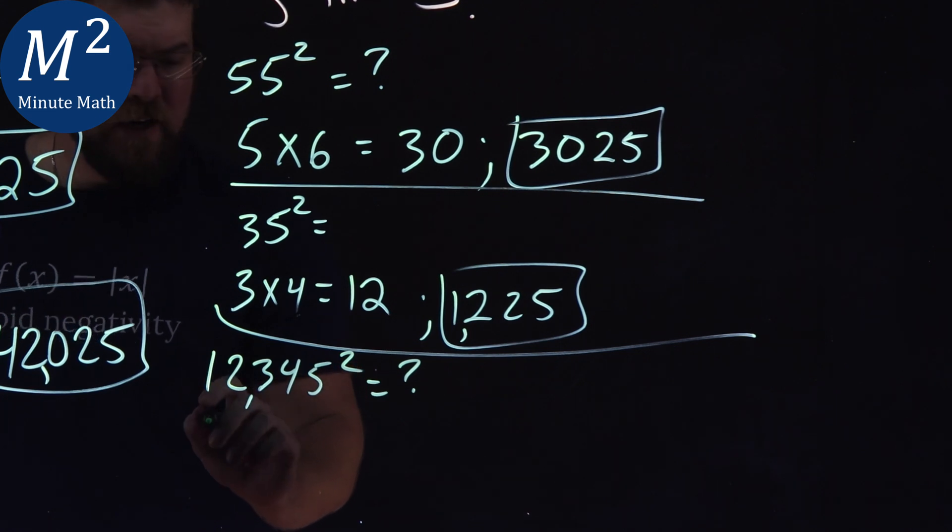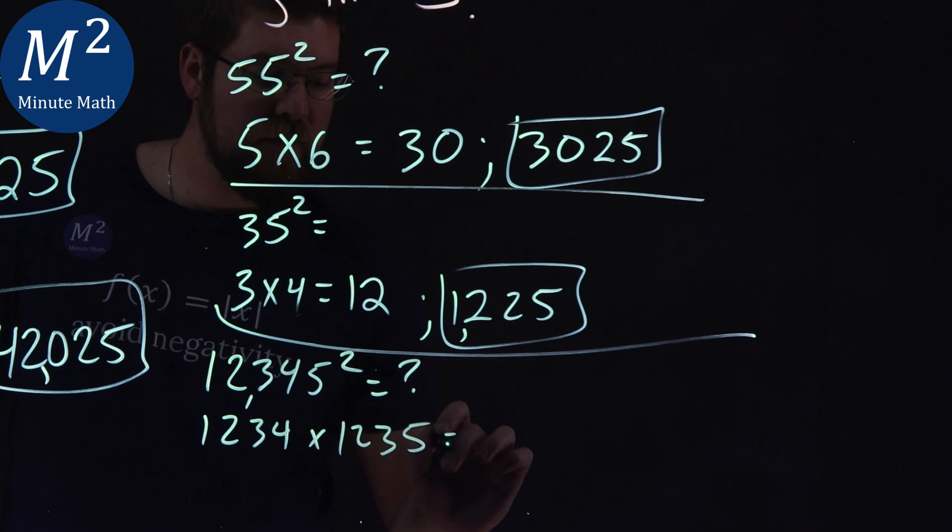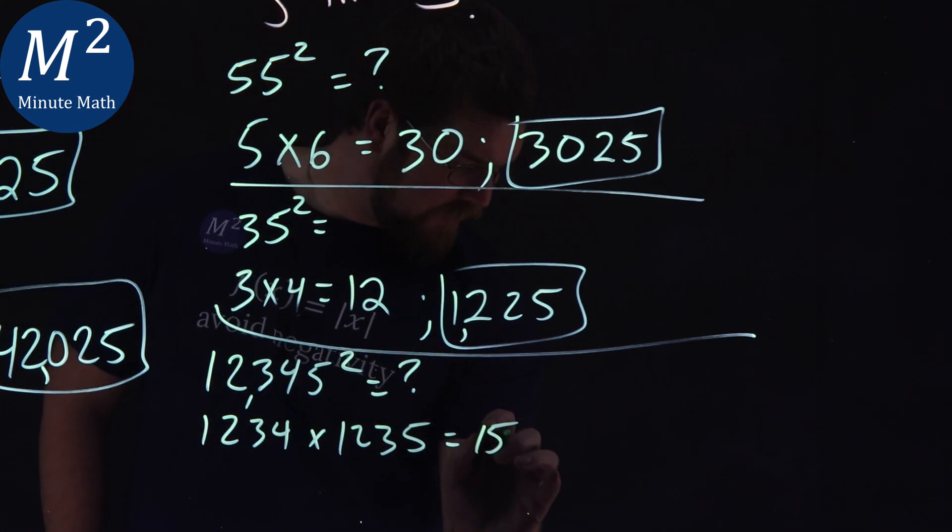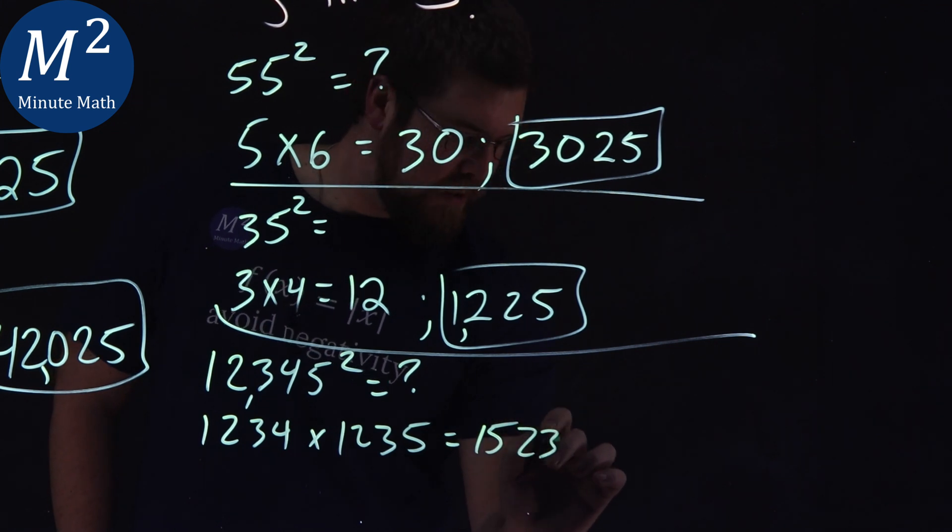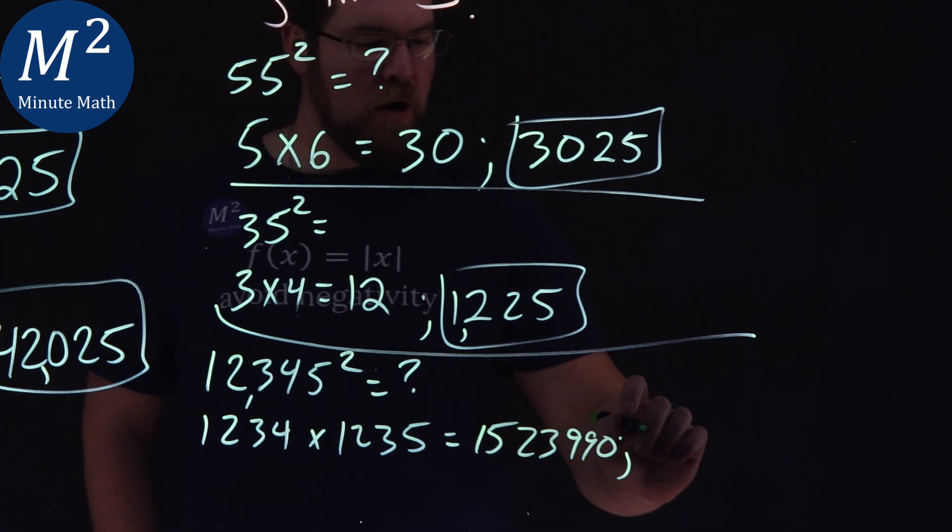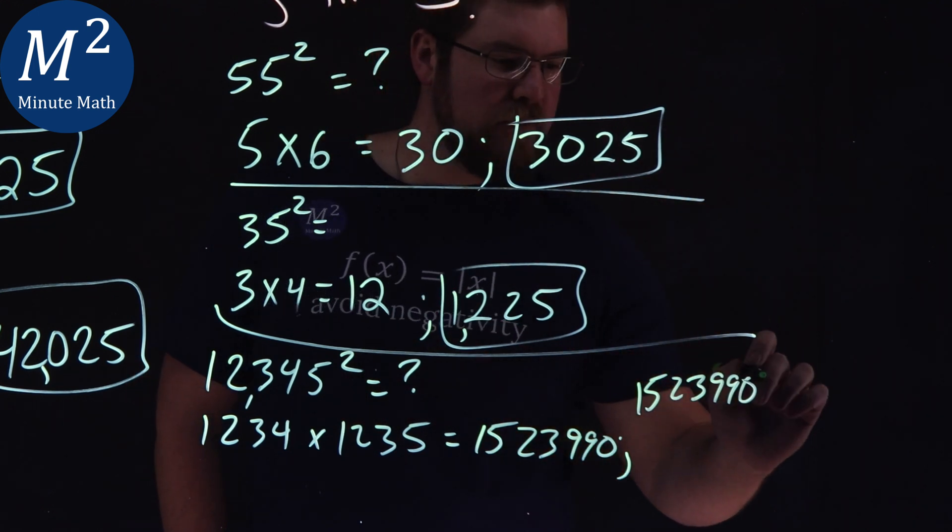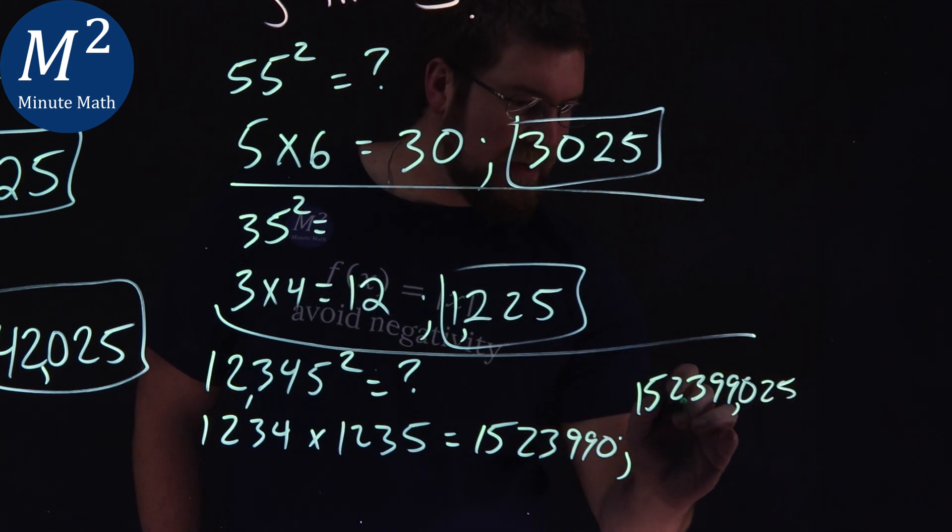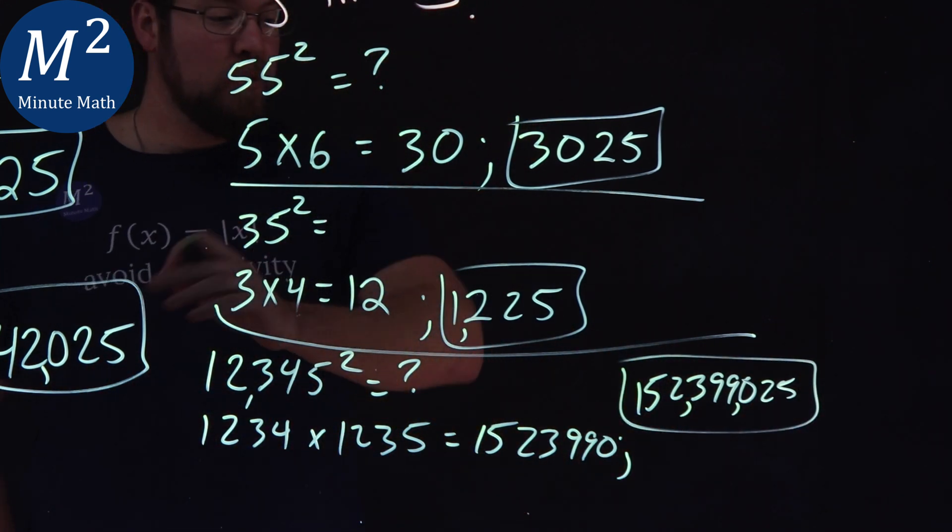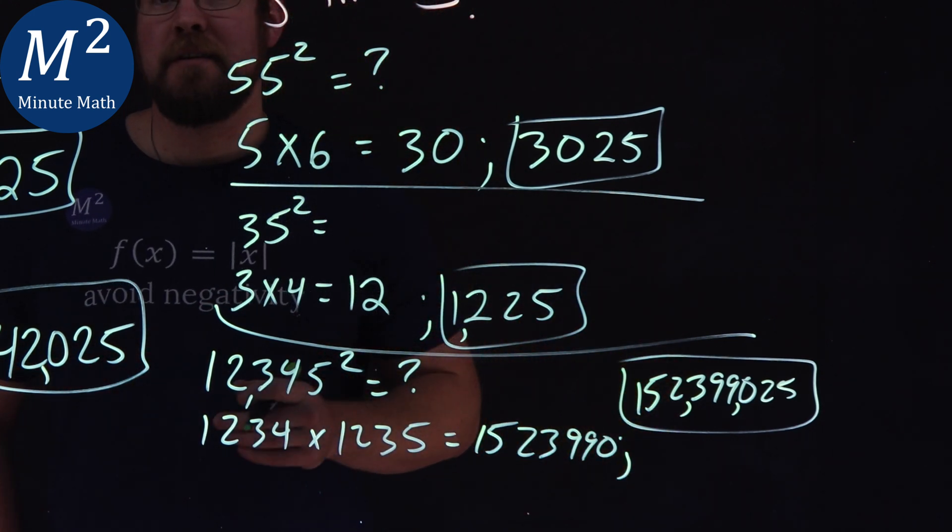Well, I take the first four digits there, 1234, and I multiply it by 12,345. That came out to be a, I wrote down my notes here, 152,390. Well, if our rules still apply, we take that large number, 152,390, and just put a 25 at the end. And you should check that in your calculator to make sure I'm correct, but I know I am. 12,345 squared is equal to 152,399,025.